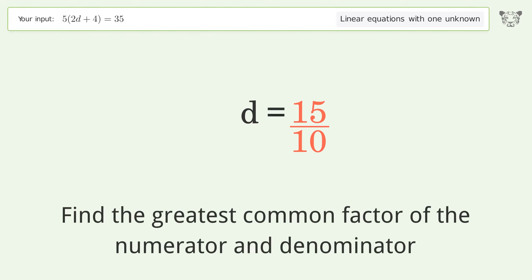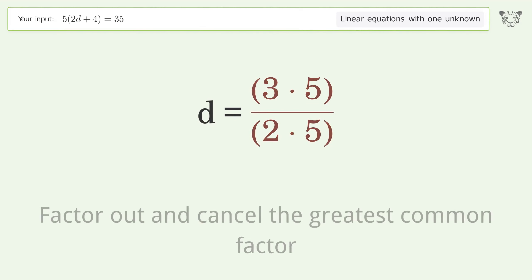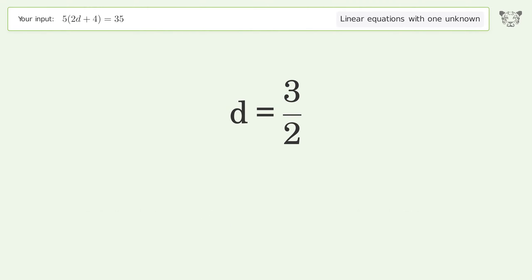Find the greatest common factor of the numerator and denominator. Factor out and cancel the greatest common factor. And so the final result is d equals three over two.